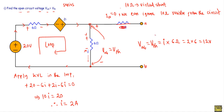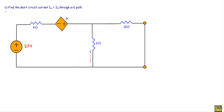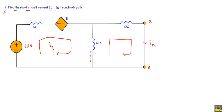Vth equals the current i flowing through the 6 ohm resistor times 6 ohms: 2 × 6 = 12 volts. So Vab equals 12 volts, which is the open circuit voltage. Next, we connect terminals A and B with a short path, and the short circuit current will be our Norton current In. In step two we find the short circuit current Isc using mesh analysis.